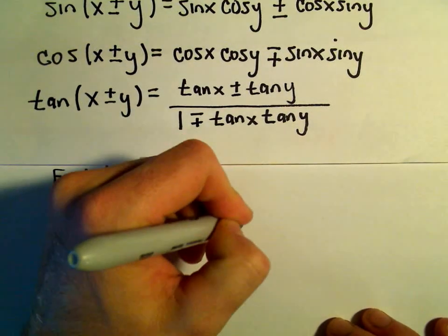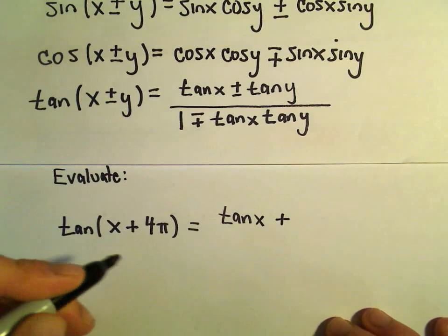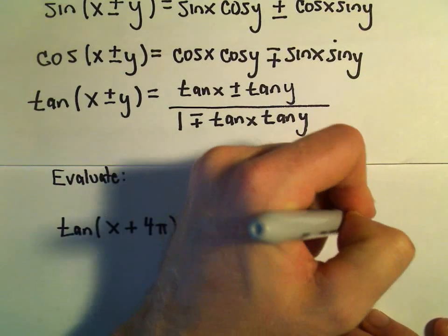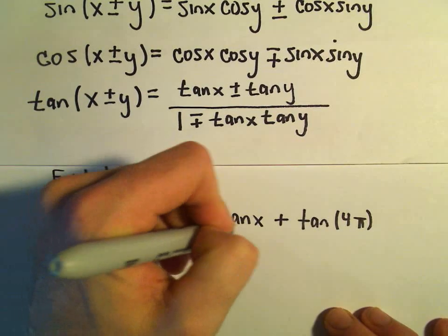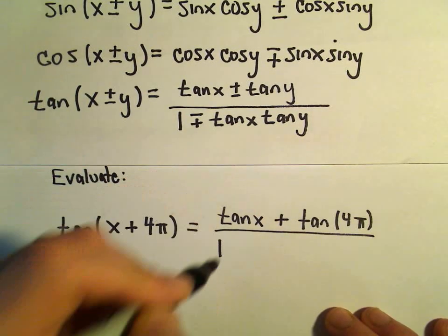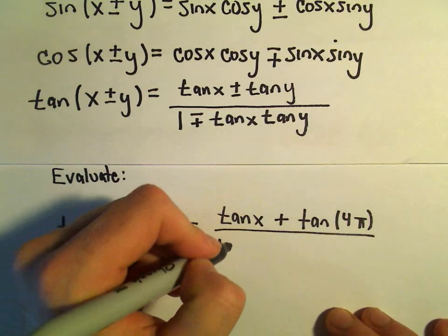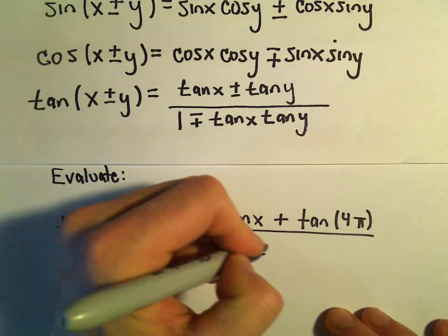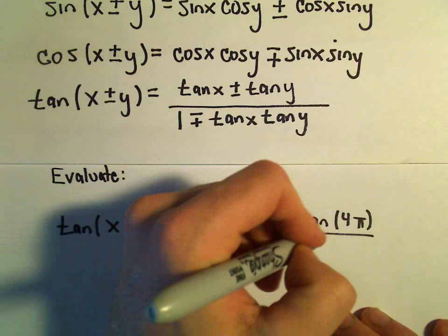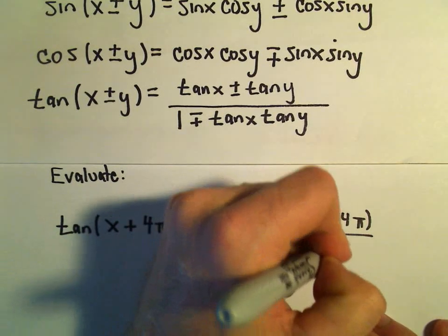well, we would simply get tangent of x plus tangent of 4π over 1. But let's see, since it was a plus originally, it switches to a negative in the denominator. And then we'll get tangent of x times tangent of 4π.